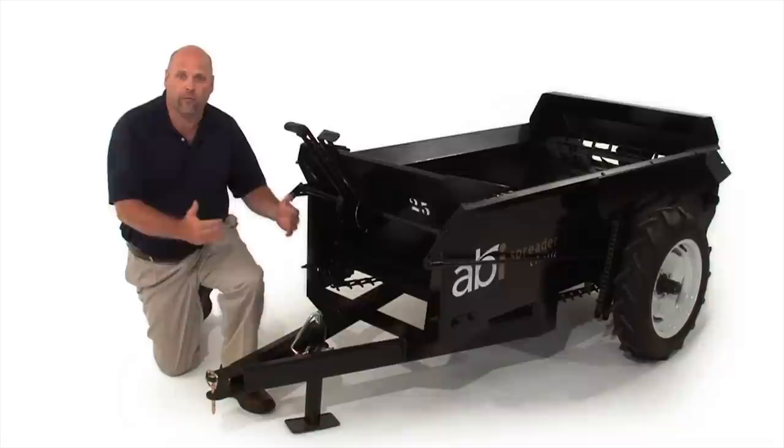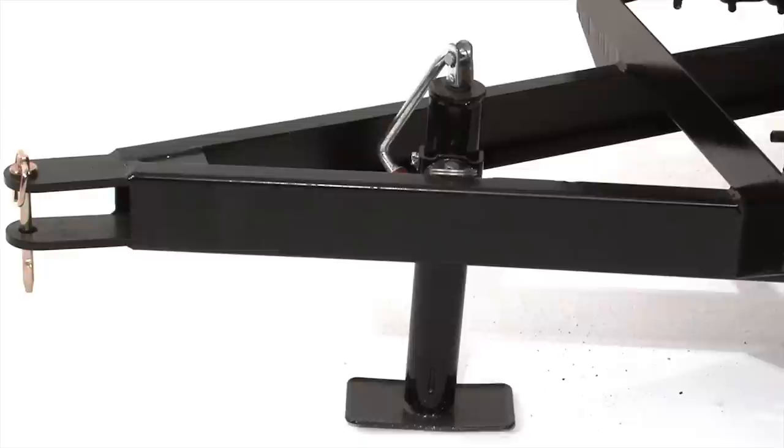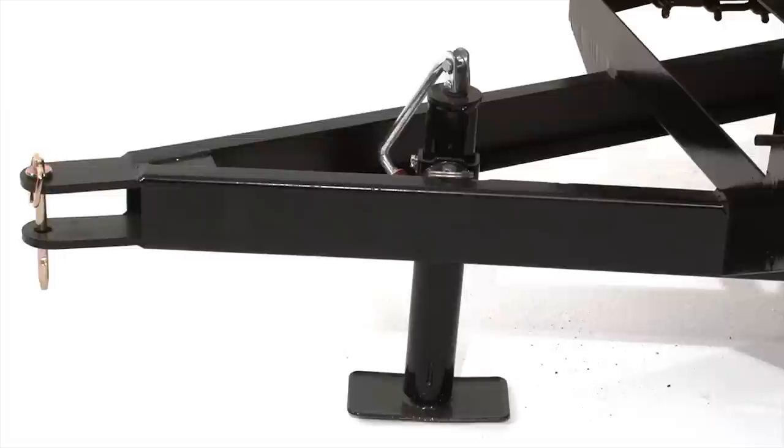And connected to the A-frame is a swing away jack. This allows you to stabilize the spreader when you unhook it. That way, when you go back to hook back up again, your tongue is in the exact same location.